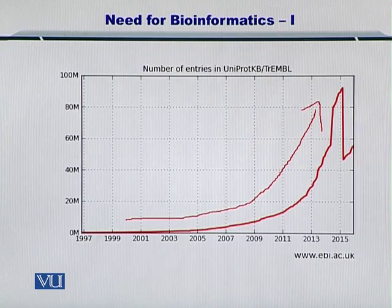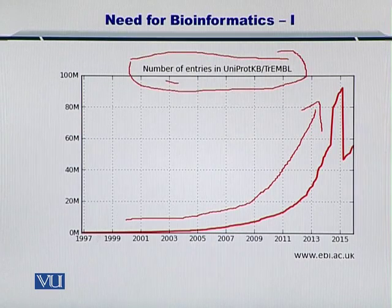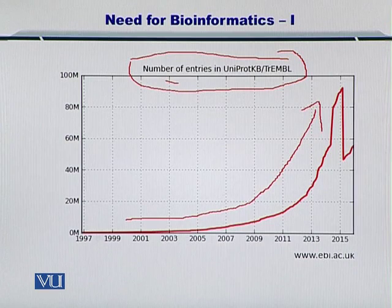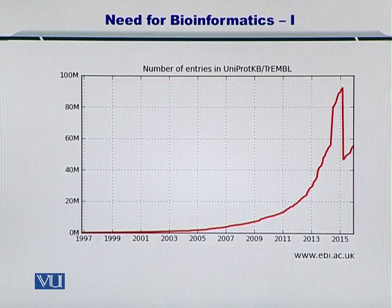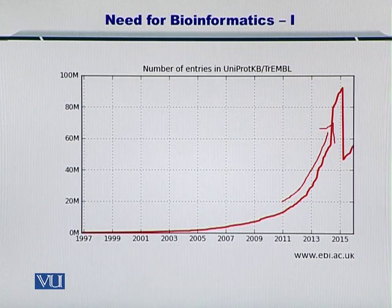Specifically, this graph is showing you the growth of the entries in the UniProt database, which is simply a protein sequence database, or you can call it the number of proteins that are known — the sequences versus the years on the horizontal axis. As you can see, there is an exponential rise in this data, and this sequence information can be used as input for bioinformatics tools towards understanding biology in a better way.